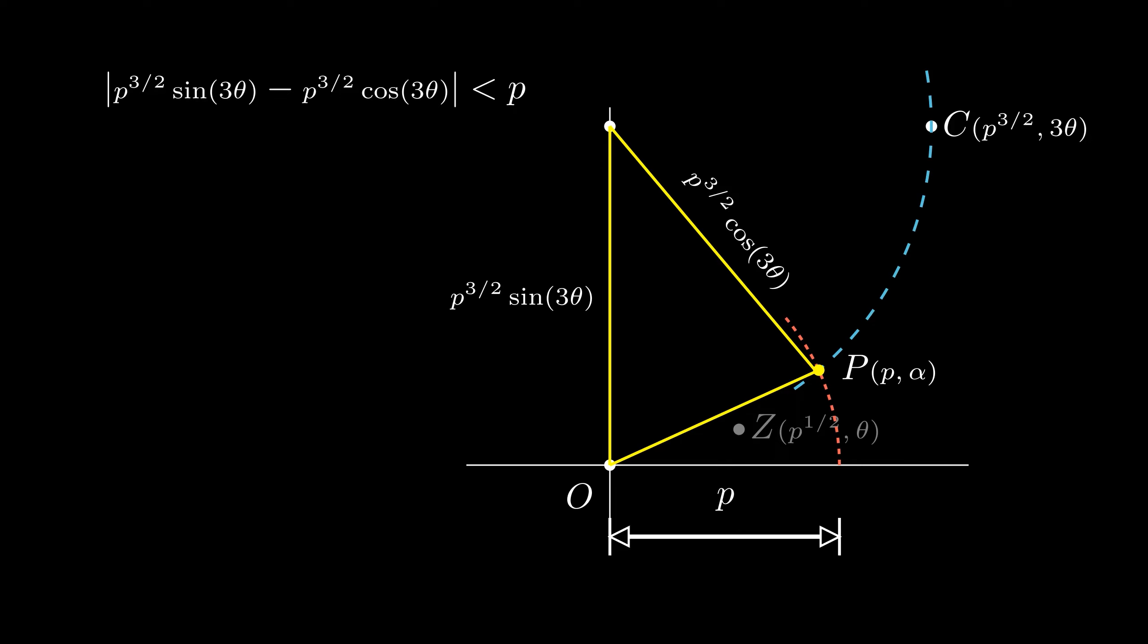We notice that 3 theta must be less than a right angle to keep point z in the first quadrant with positive imaginary and real parts to become the sides of the triangle. Therefore, theta must be less than pi over 6.